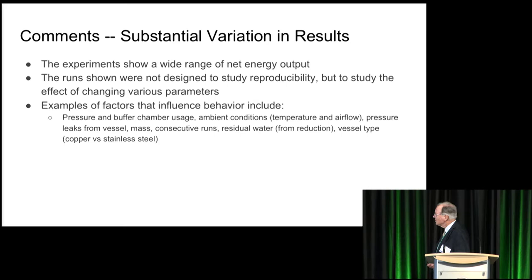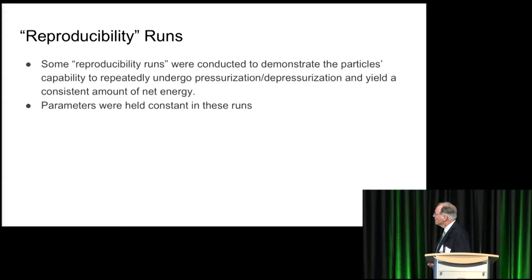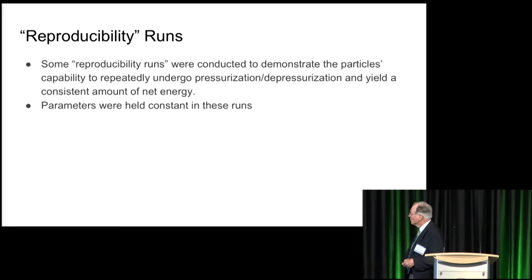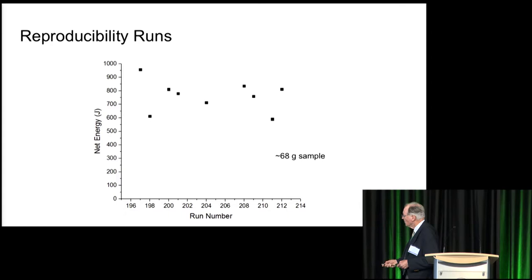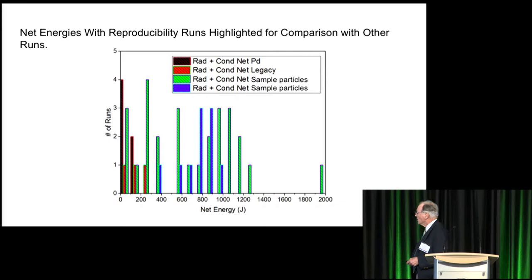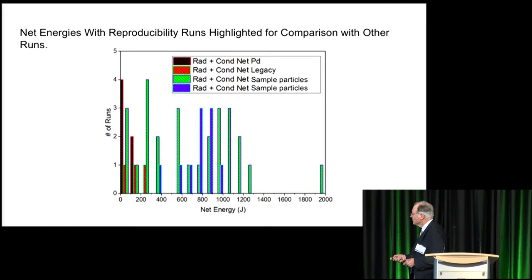There were substantial variations in results due to the parameter changes. For reproducibility runs, we ran some where we expected to always get the same results by keeping everything constant — same amount, same pressure, same temperature. We have variations like so. Putting those back into the previous graph, the blue reproducibility runs sort of lay in the center of all the scatter we had from the previous runs where things were being varied.